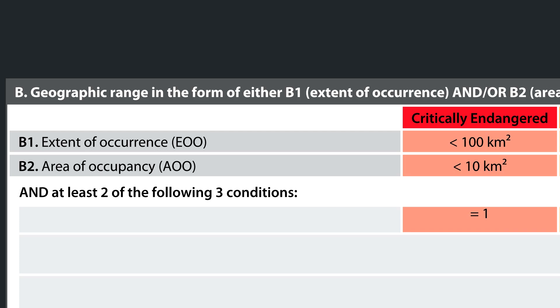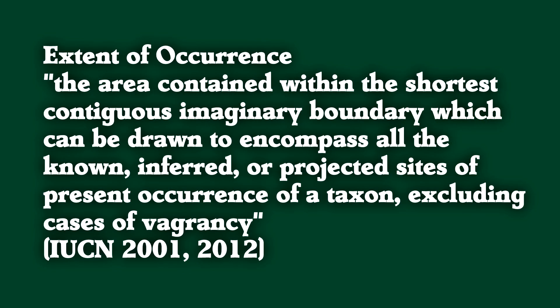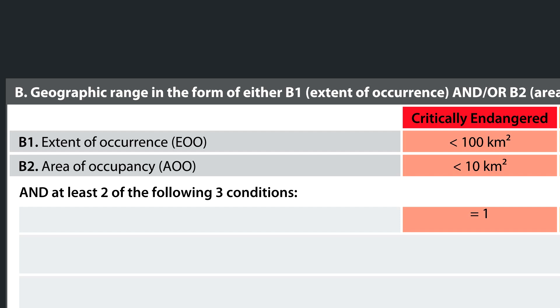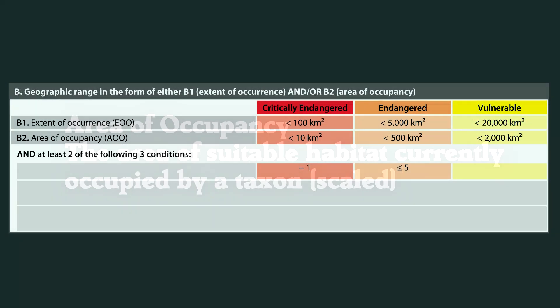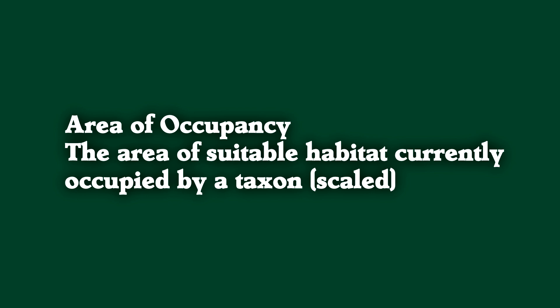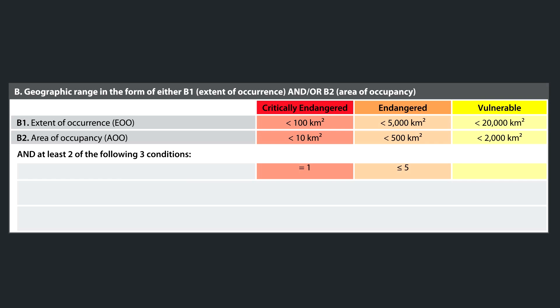Extent of occurrence is defined as the area contained within the shortest contiguous imaginary boundary which can be drawn to encompass all the known, inferred, or projected sites of present occurrence of a taxon, excluding cases of vagrancy. Basically, if you drew a line on a map around every place you could find every living individual of this species — except for ones way outside their normal range — how big would that line be? Area of occupancy, on the other hand, refers to the area of suitable habitat currently occupied by the taxon. For example, if the extent of occurrence was very large but inside that boundary they only live on cliff faces, they don't actually live in that entire range.